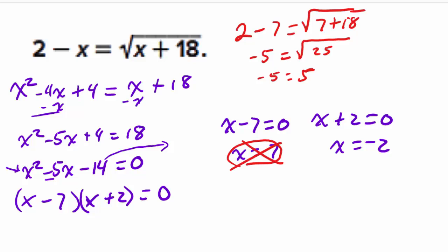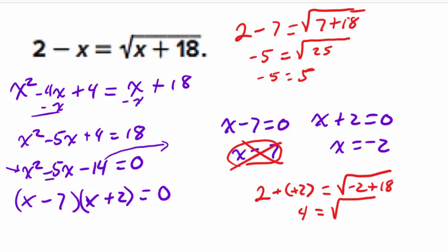Trying x equals negative 2: 2 minus (negative 2) equals the square root of (negative 2 plus 18). The left-hand side is 2 plus 2, which is 4. The right-hand side is the square root of 16, which equals 4. Four equals 4 is true. Therefore, x equals negative 2 is the only solution.